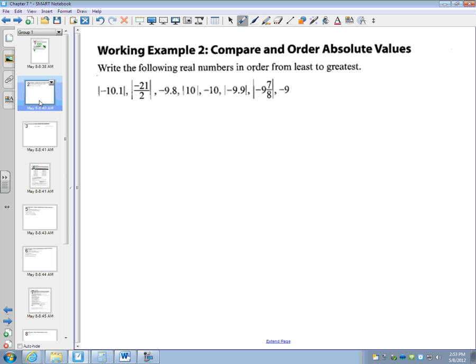Next up it says write out the following real numbers in order from least to greatest. So we're going to evaluate each of these in terms of their decimal equivalent. The absolute value of negative 10.1 is just 10.1. That's how far it is from zero.